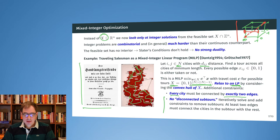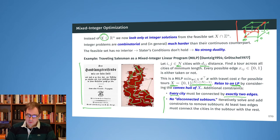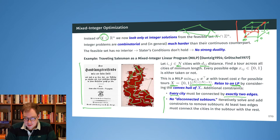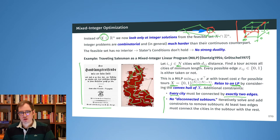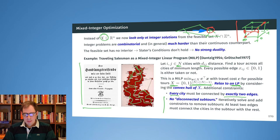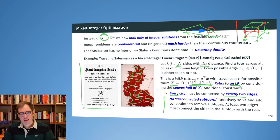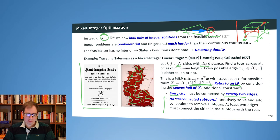The interesting thing is that we will still get only integer results automatically because of the way these equality and inequality constraints are designed. If the LP optimization direction pushes me toward a boundary, I end up with an integer solution. Therefore, the traveling salesman problem has a nice structure: we can relax it to an LP, add additional inequality constraints when we find a sub-tour, resolve it, find the next sub-tour, add the constraint again, and iterate until done.